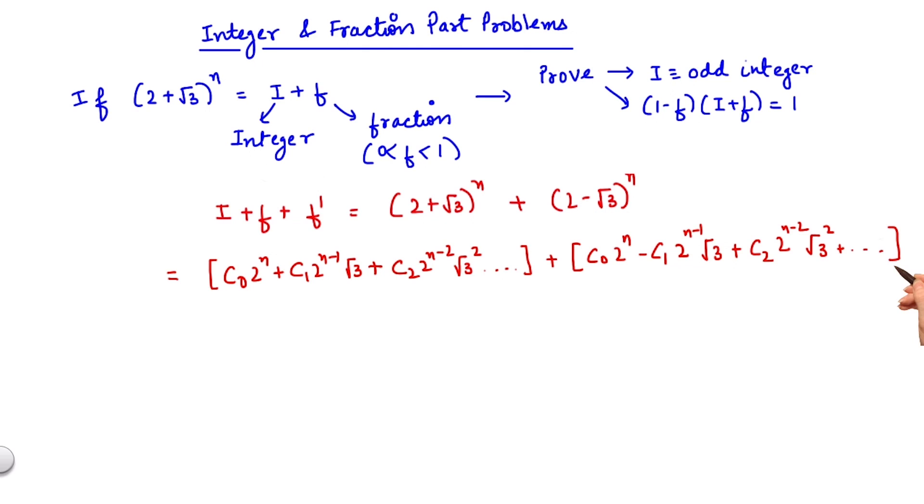it is clear that from this expansion, I can cancel out the terms having an odd power of root 3. So be it this term and so on. So finally I would get 2 times c0 2 to the power n plus c2 2 to the power n minus 2 root 3 square plus c4 2 to the power n minus 4 root 3 to the power 4 and so on.